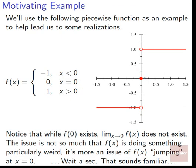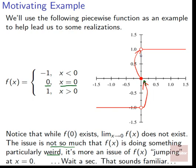Notice that while f of 0 exists — we get a value, f of 0 equals 0 — the limit as x goes to 0 does not exist. As we show up from the two different sides, they don't agree with each other. So the point in the middle, f of 0 does exist, but the limit does not exist. The issue is not so much that f of x is a weird thing; it's more an issue of f of x suddenly doing this jump, where it's doing this giant leaping around, jumping from one place to another.